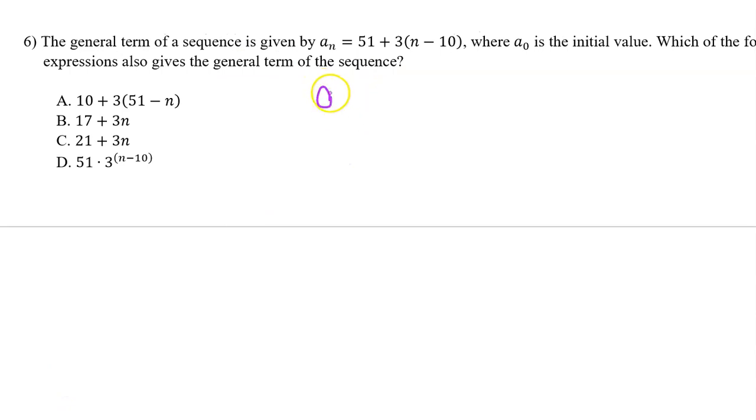You can get another version of the same rule by rewriting it without parentheses. So, I'm just going to bring down the 51 and distribute the 3. So, this will become 3n minus 30. Combining like terms, so we have 51 minus 30, that's going to be 21.